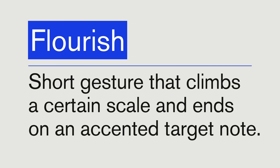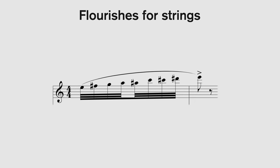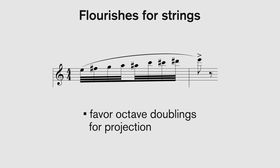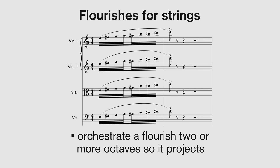An orchestral flourish, also known as a run or sweep, is a short gesture, usually just one to three beats in duration. The notes are comprised of some sort of scale, and the flourish climbs the scale in stepwise motion and ends on an accented target note, which is frequently a downbeat. Because flourishes are, by their very nature, quick and dense with notes, they favor octave doublings for projection, as opposed to unisons for tone weight. Having the timbre too heavy or thick will act like an anchor on the flourish, which needs to provide forward motion. Always try to orchestrate a flourish in at least two or more octaves so it projects. Coupling a flourish — say, by harmonizing it in thirds — tends to decrease the propulsion and forward motion.